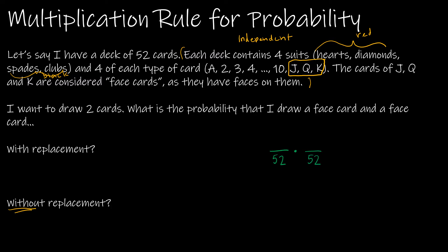How many cards are face cards? I have a jack of each suit — so four jacks, four queens, four kings — that's 12. So finding this probability, I take 12 out of 52 and then 12 out of 52 again. I'm using the multiplication rule, not the general multiplication rule. So it's 12/52 times 12/52.